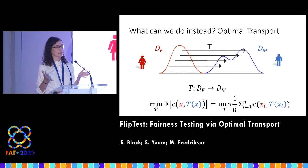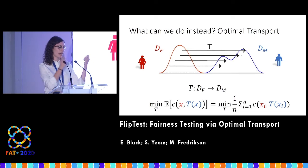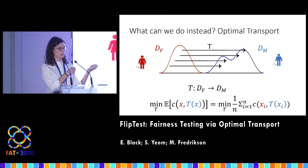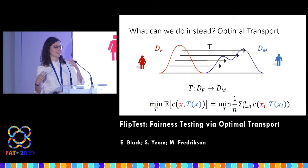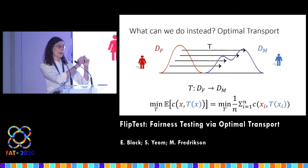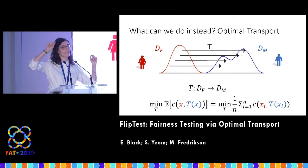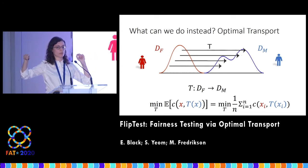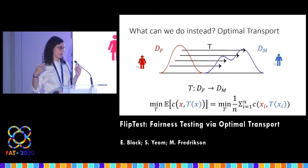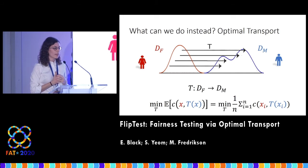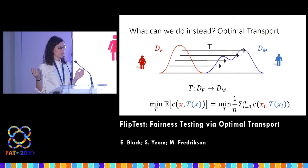The way that this gives you the male version of me is that if I'm in the female distribution, this morphing process gives you a mapping from one distribution to the other. So wherever I'm mapped to in the male distribution will be the male version of me.